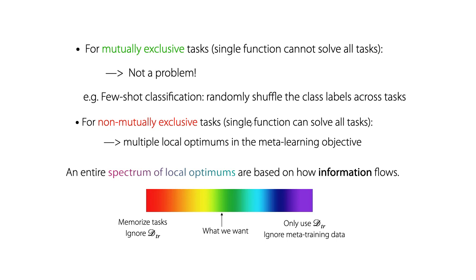These local optimums form an entire spectrum, which are based on how information flows. On the one end, it memorizes the tasks and ignores the task training data. And on the other end, it only uses the task training data and ignores the meta-training data. This suggests a potential approach is to control how information flows.